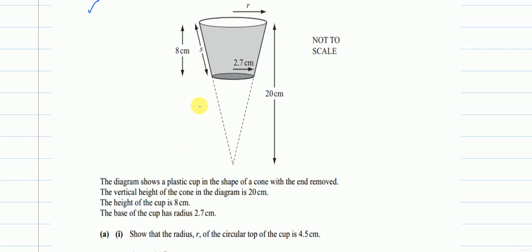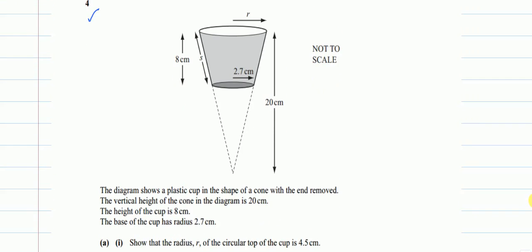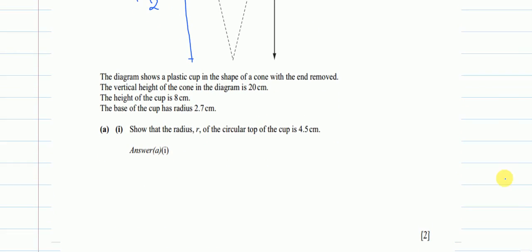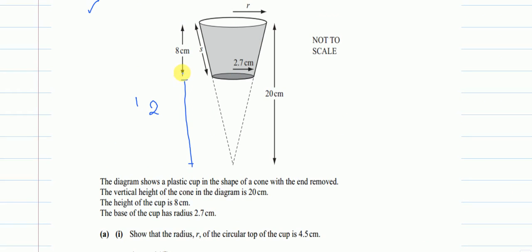For part A, the concept we'll use here is similar triangles. By comparing the similar triangles, the height of the small cone at the bottom will be 12, because 8 plus 12 equals the total height of 20. So when my height was 12, the radius of the cone opened by 2.7 centimetres.